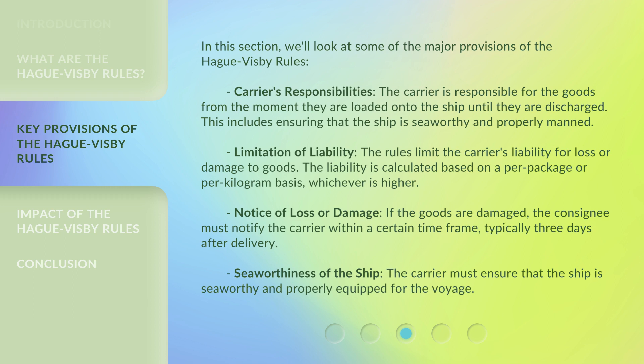In this section, we'll look at some of the major provisions of the Hague-Visby Rules. Carrier's Responsibilities: the carrier is responsible for the goods from the moment they are loaded onto the ship until they are discharged, including ensuring that the ship is seaworthy and properly manned. Limitation of Liability: the rules limit the carrier's liability for loss or damage to goods, calculated on a per-package or per-kilogram basis, whichever is higher. Notice of Loss or Damage: if the goods are damaged, the consignee must notify the carrier within a certain time frame, typically three days after delivery. Seaworthiness: the carrier must ensure that the ship is seaworthy and properly equipped for the voyage.